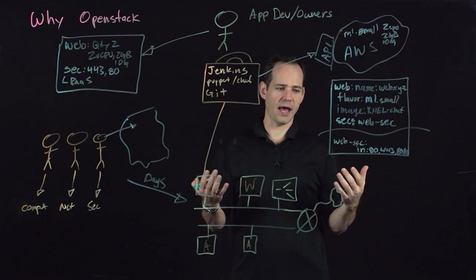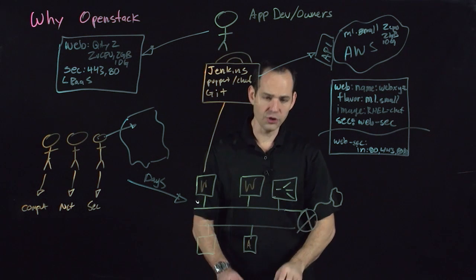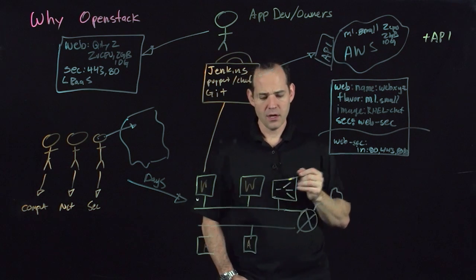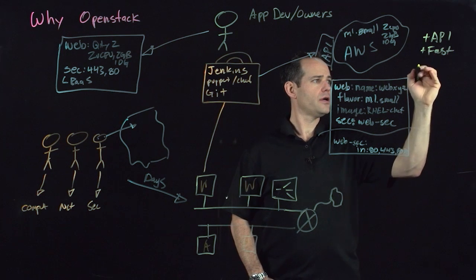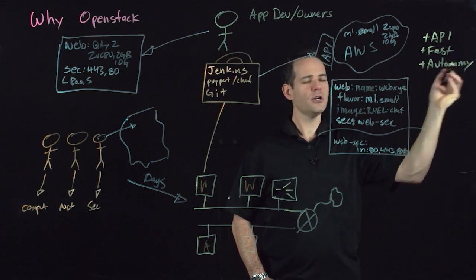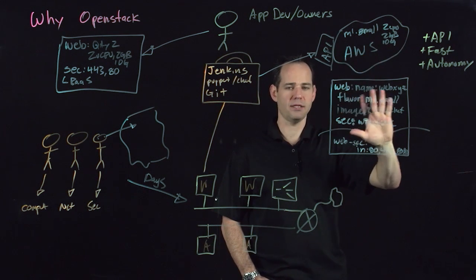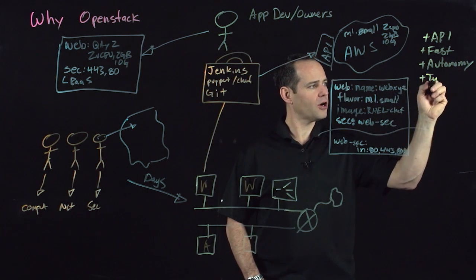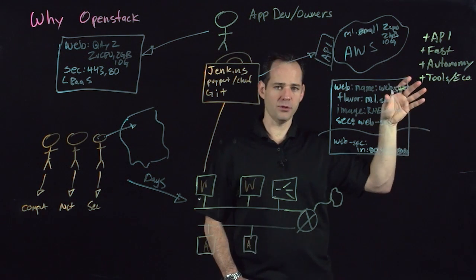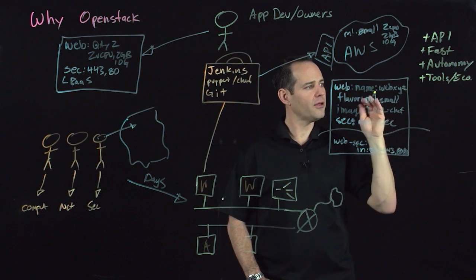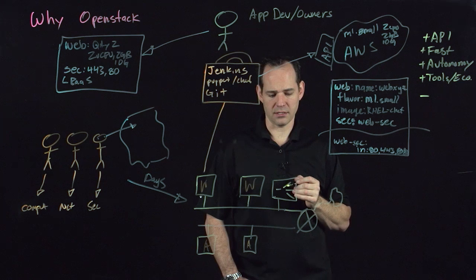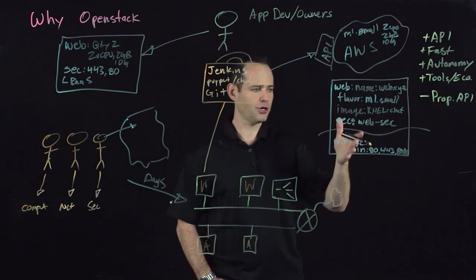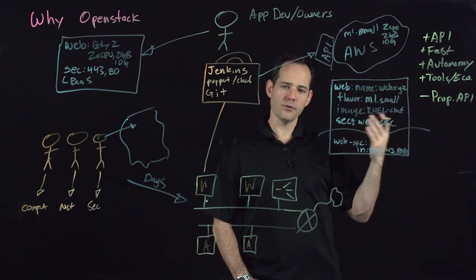So how does this relate to OpenStack? OpenStack relates to this because there is good and bad about the public cloud. The good: there's a well-documented API, it's fast, and developers have complete autonomy — they don't need to talk to anyone to provision, they just write code. Most importantly, there are tools and an ecosystem with native integration with AWS. The problem, though: in the case of AWS it's a proprietary API, so if you write code to AWS or use proprietary features, you're potentially locked in.